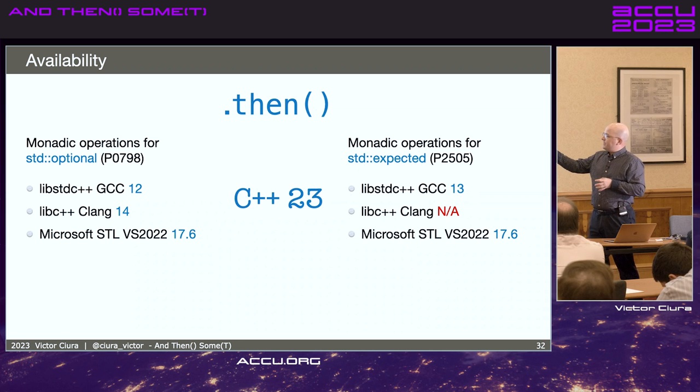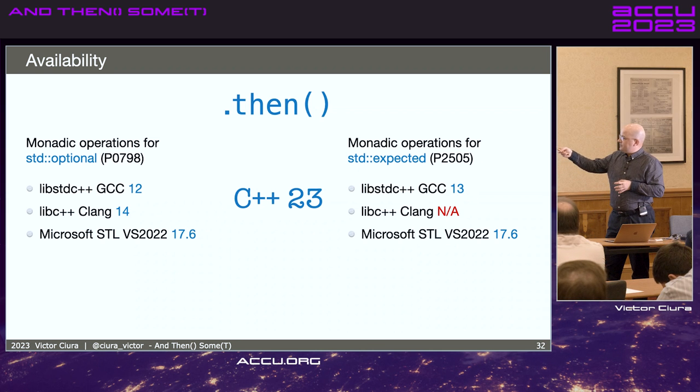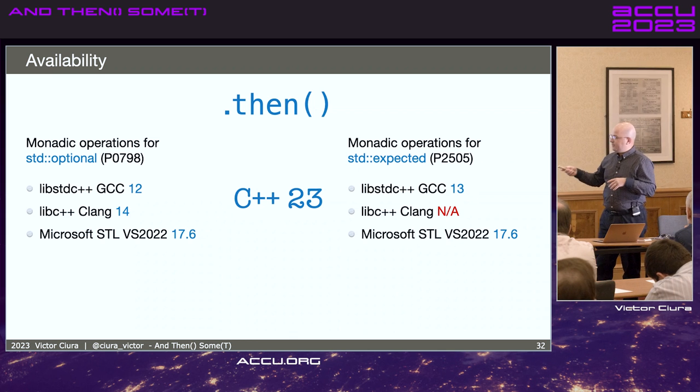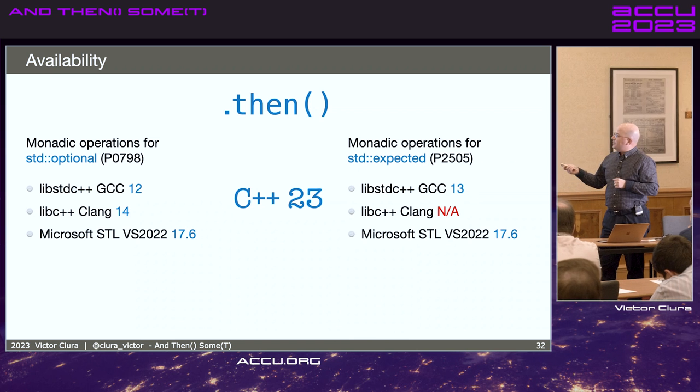Monadic continuations are a separate thing. So, for example, in lib standard C++ in GCC, that's version 12. For Clang, version 14, Visual Studio 17.6. And for expected, the situation is not great at the moment. So, GCC 13, we still don't have any implementation in Clang last time I looked. And Visual Studio 17.6, which is in preview right now and it's going to land around May, I believe.